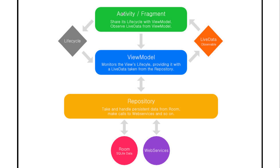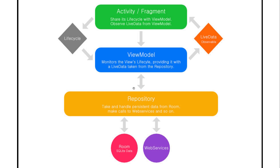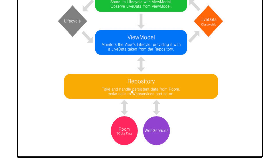As a conclusion for this diagram: when an Activity starts, the lifecycle is started. The ViewModel takes data from the Repository; the Repository takes data either from Room or web services; then passes it back to the ViewModel; the ViewModel passes LiveData to the Activity or Fragment.